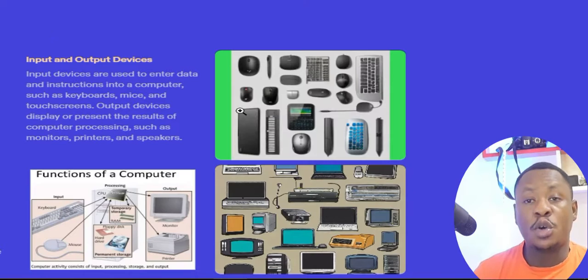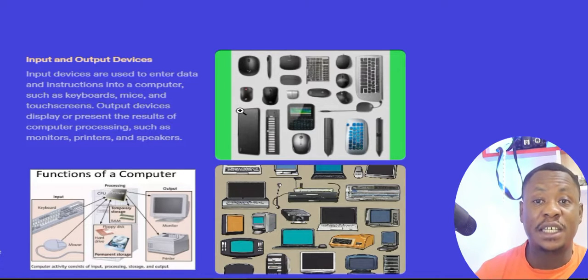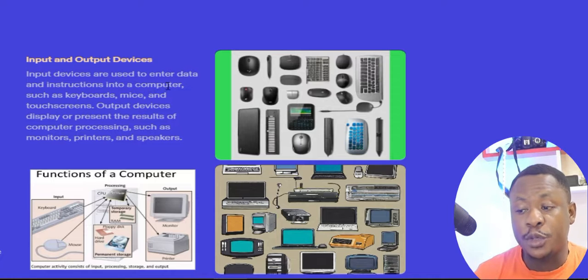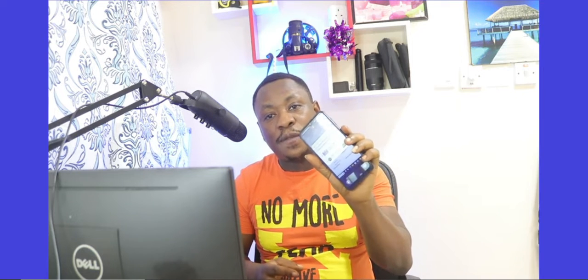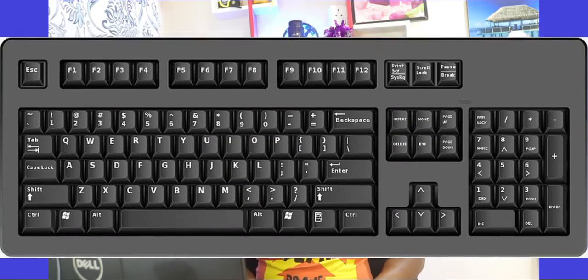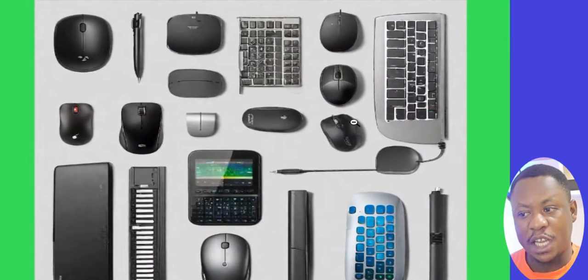Let us look at the basic parts of the computer. We have input and output devices. Input devices are used to enter instructions into the computer, such as keyboards, mice, and touch screens. Your smartphone screen is a touch screen, so it is an input device. The mouse is also an input device, and the keyboard we use to enter data is also an input device.